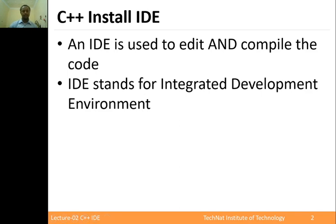The compiler is software that translates source code into machine code. The compiler is the translator — it takes your source code and produces machine code the computer can run. The compiler is integrated into the IDE, alongside the editor.